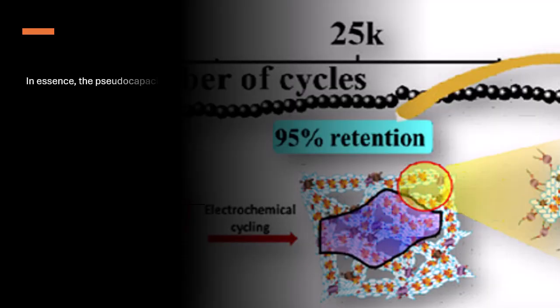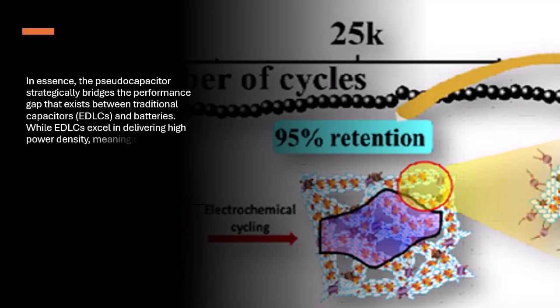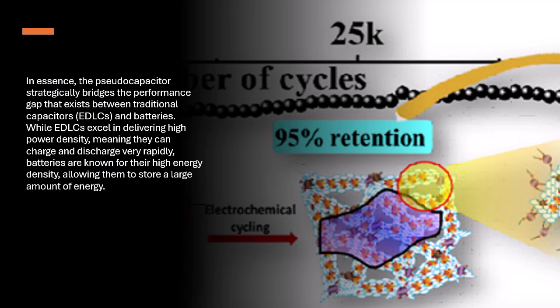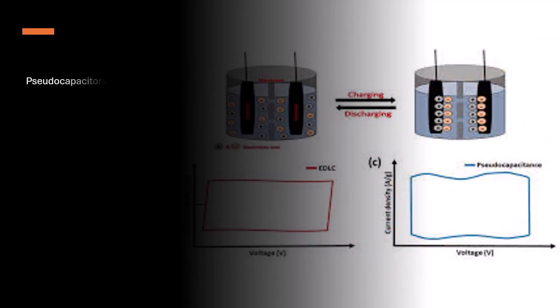In essence, the pseudo-capacitor strategically bridges the performance gap that exists between traditional capacitors (EDLCs) and batteries. While EDLCs excel in delivering high power density, meaning they can charge and discharge very rapidly, batteries are known for their high energy density, allowing them to store a large amount of energy. Pseudo-capacitors offer a compelling combination of these desirable characteristics.